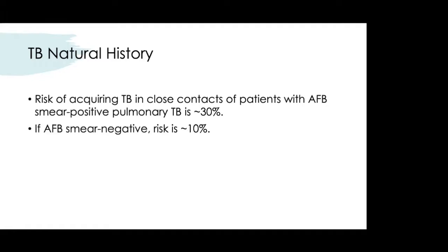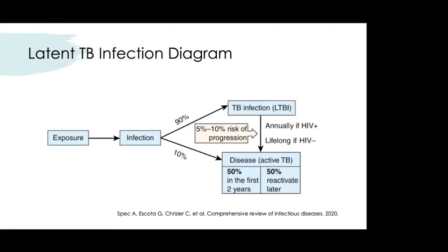People can be diagnosed with pulmonary TB even if the smear is negative, because the smear could be negative but the culture ends up growing something. The risk of getting TB from a close contact whose smear is negative is 10 percent. It's important to be familiar with the latent TB exposure diagram.